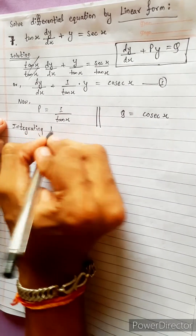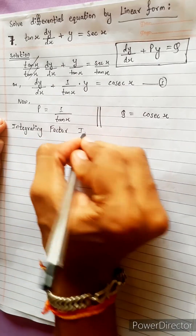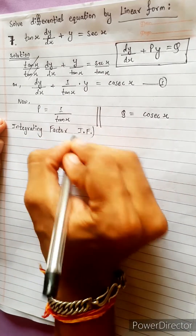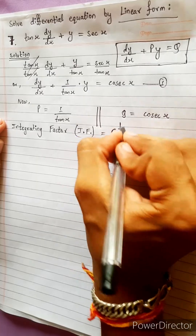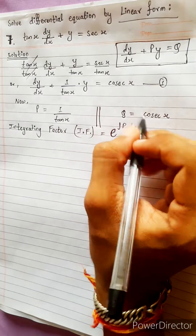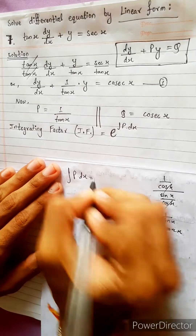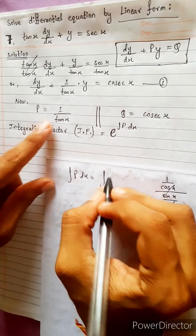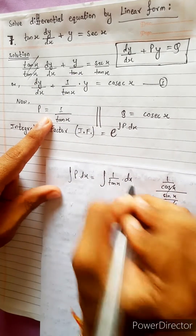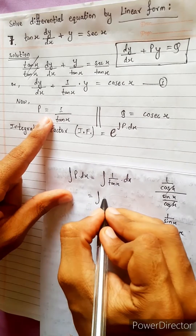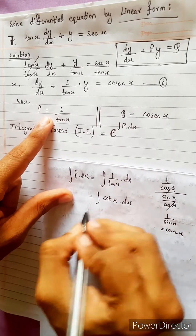Integrating factor: I.F. equals e to the power of integration of P dx. Integration of P dx — P is 1/10x, which is cot x. So the integral of 1/10x is cot x.